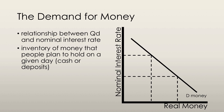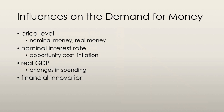The quantity of money demanded is the inventory of money that people plan to hold on any given day. Nominal money is the quantity of money measured in dollars. Ceteris paribus, the quantity of nominal money is proportional to the price level. Real money equals the nominal money divided by the price level as measured by the GDP deflator, and this shows the quantity of money in terms of what it will actually buy.